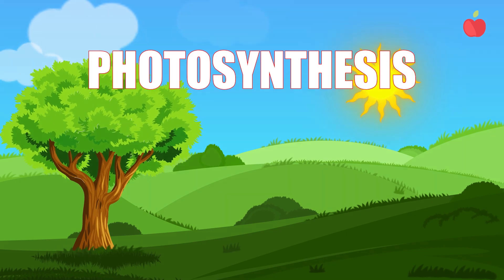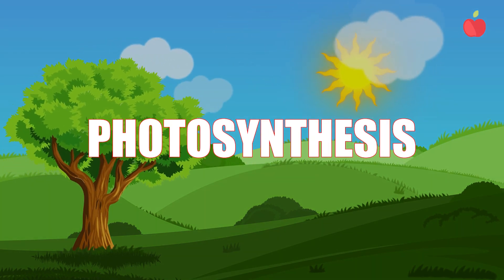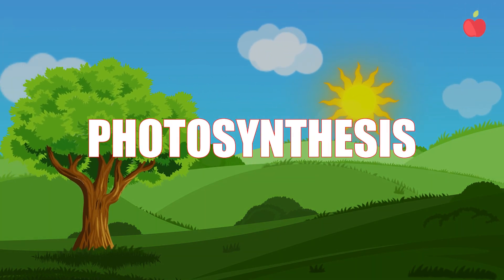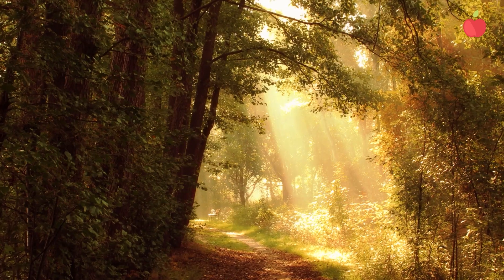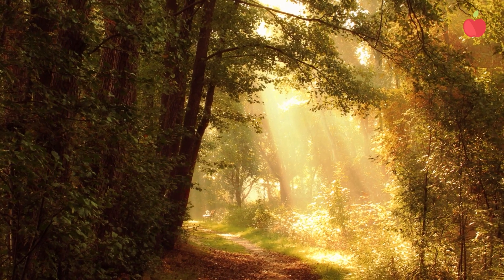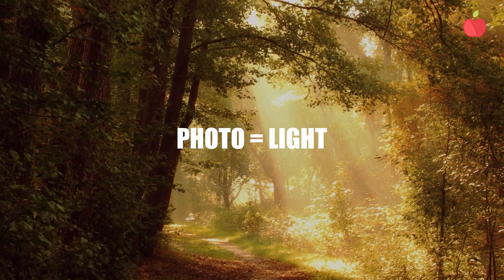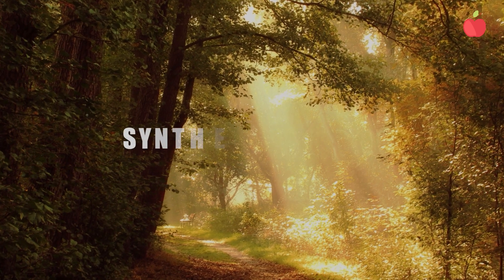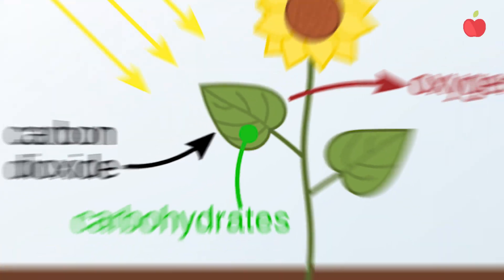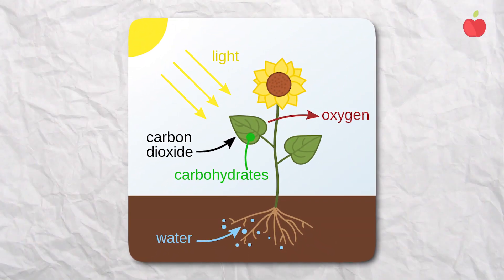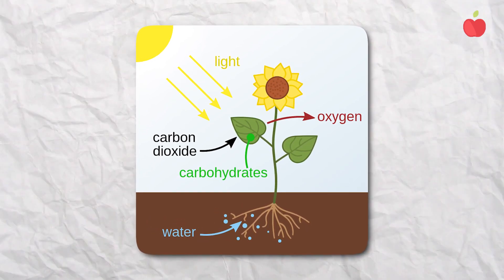Let's start with the etymology of the word photosynthesis. It's a big word, but it's easy to understand by going back to its roots. Photosynthesis originates from two Greek words: photo, which means light, and synthesis, which means putting together. So, photosynthesis is a process of using light to make food for the plant to survive.